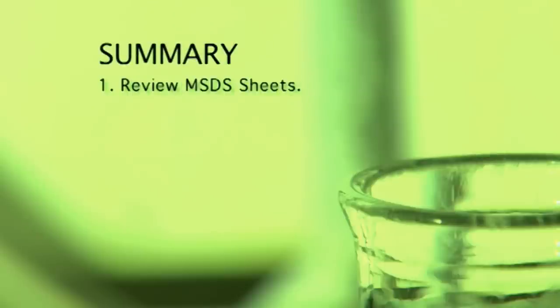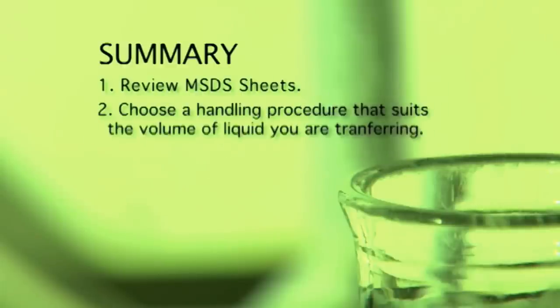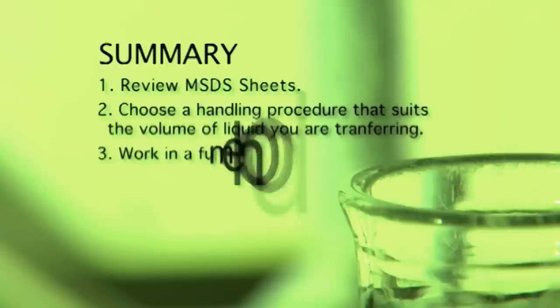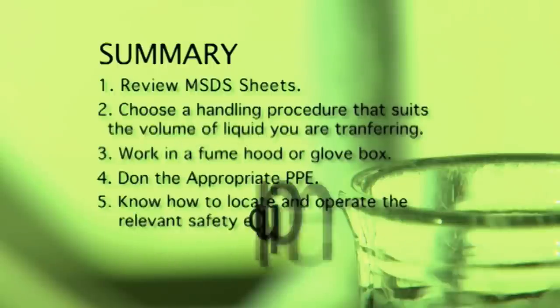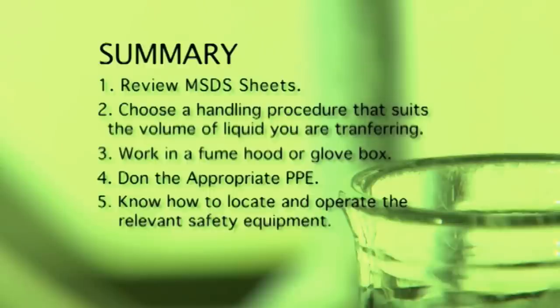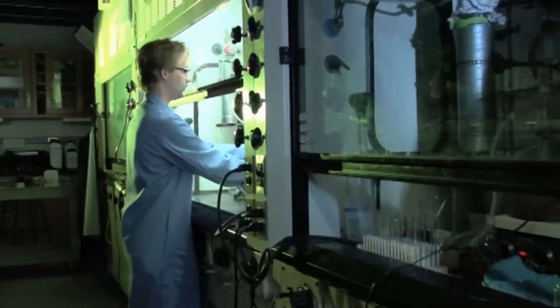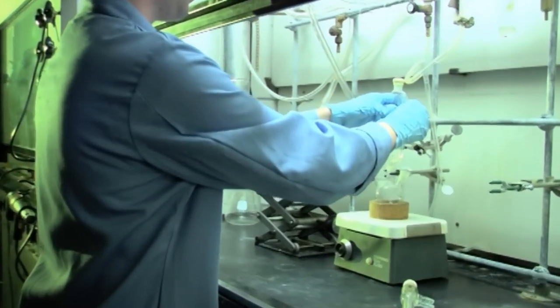To summarize, use MSDS sheets to understand the hazards of the chemical you are handling. Always use the appropriate handling procedure for the volume of liquid you are transferring. Make sure you are working in a fume hood or glove box and wearing appropriate personal protective equipment. Know where safety equipment such as fire extinguishers, eye washes and showers are located and know how to use them. Remember that the job is not completed until you clean up your workspace. When working in a lab setting, always be mindful of your health and safety and remember to practice the safety procedures outlined in this video.